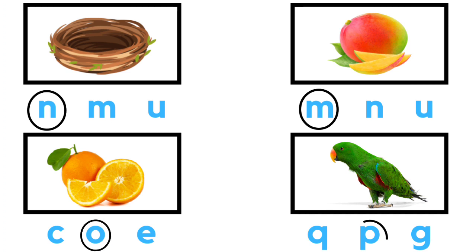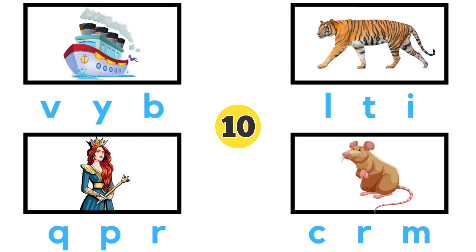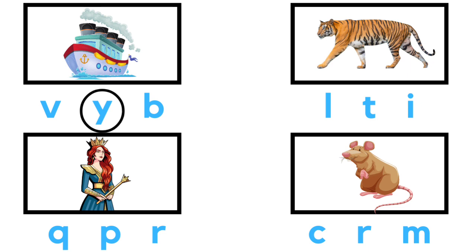P for Parrot. Y for Yacht. T for Tiger. Q for Queen.